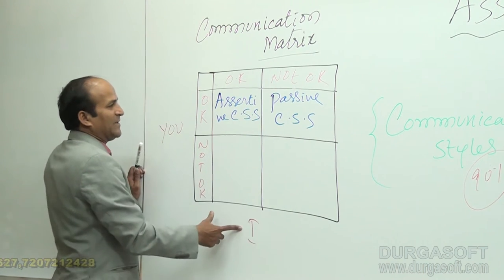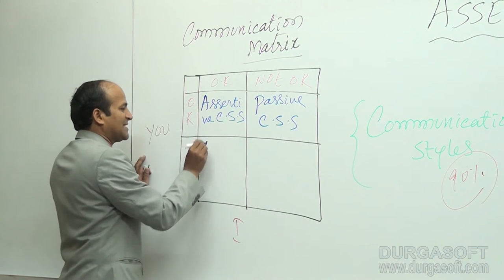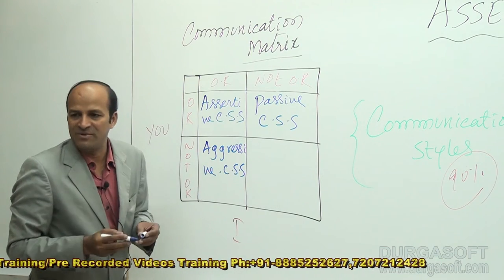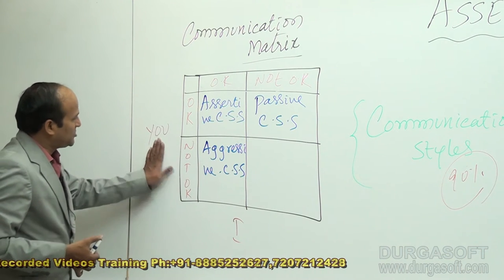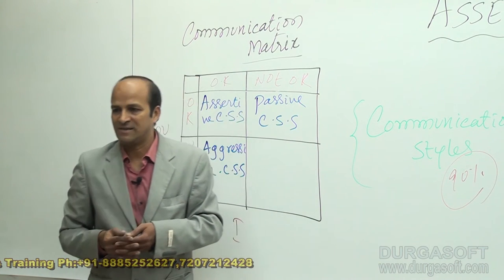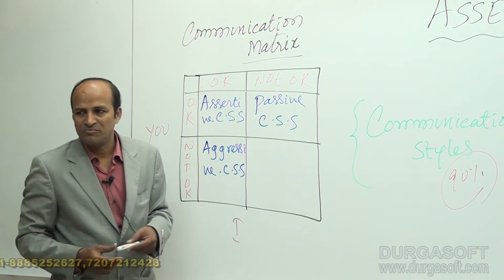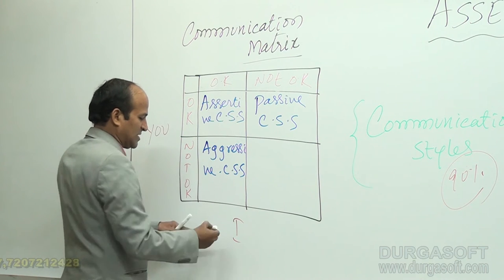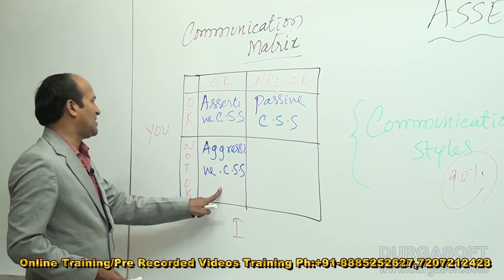When I am communicating with you and I am okay but you are not okay, that is aggressive communication. Aggressive communication means I am winning but you are not — you are failing. Most of the time I am the only one getting success; I am overriding you. That communication style is called aggressive communication style.